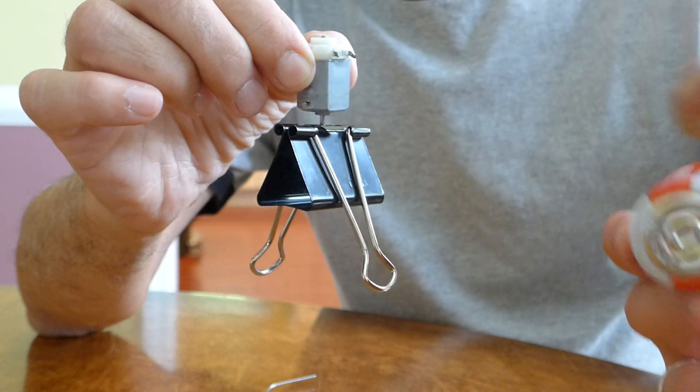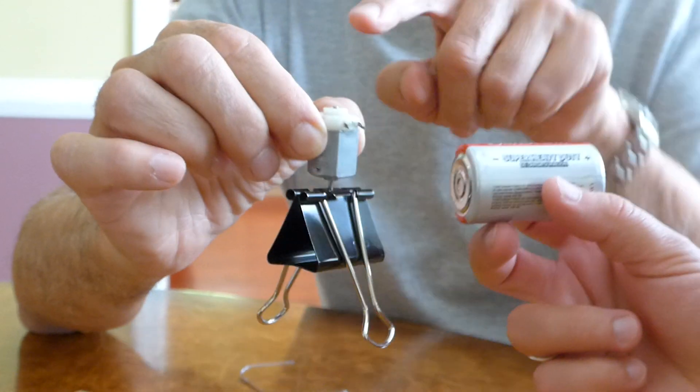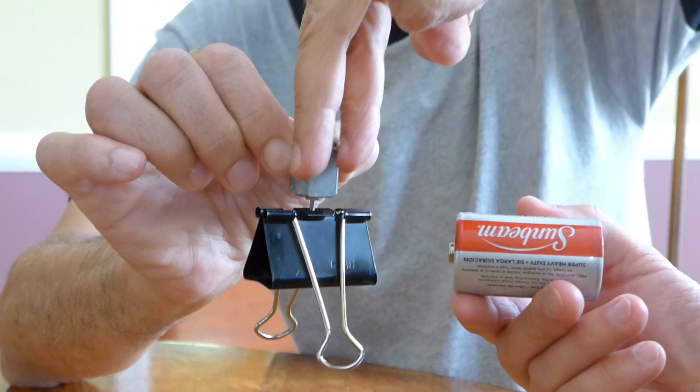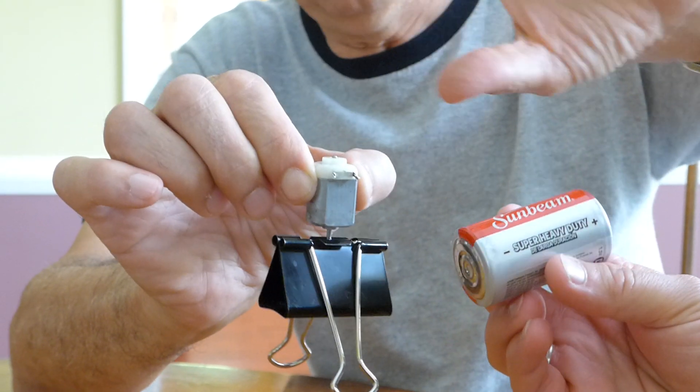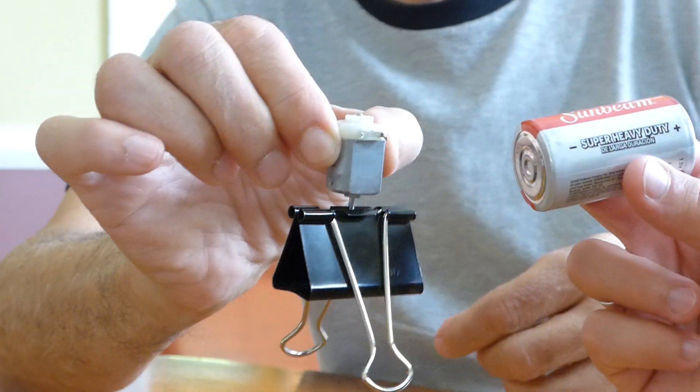Because when you have a DC power supply, like this battery is, and a DC motor, you can choose your direction simply by reversing the wiring from one pole to the other, like that. And it will turn counterclockwise or clockwise. So that's what he's done.